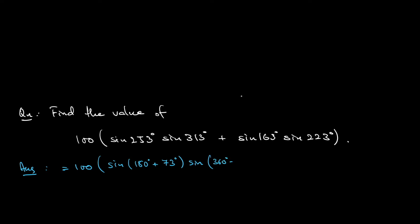Plus 163 degrees I can write as sine 180 minus 17. And sine 223 degrees I can write as sine 180 degrees plus 43 degrees.